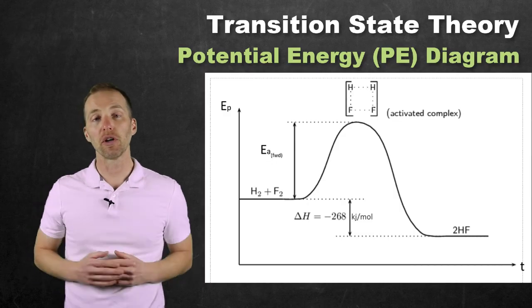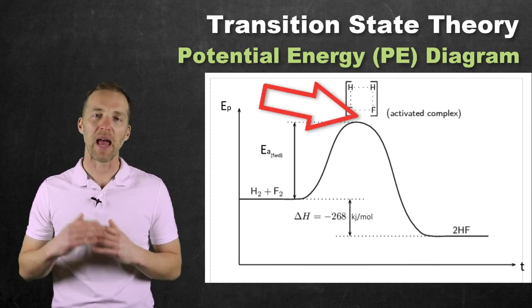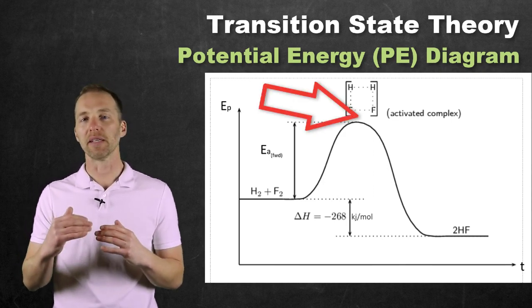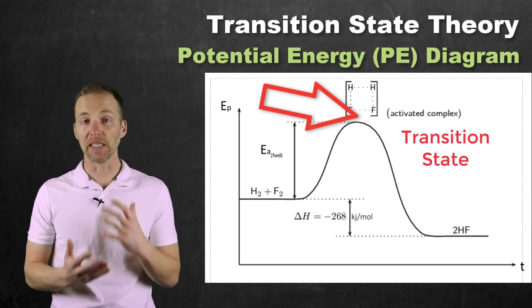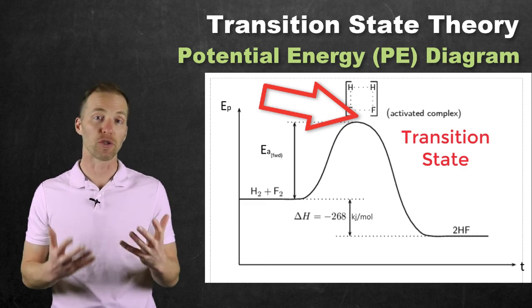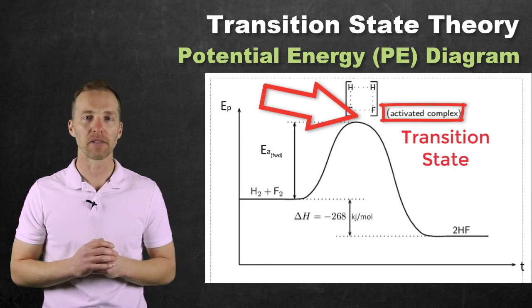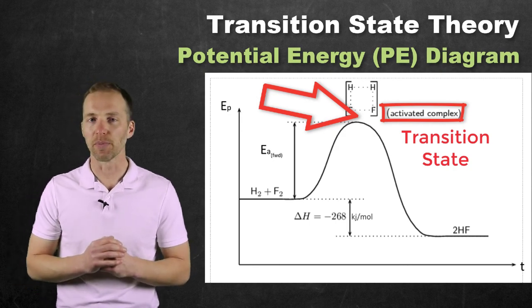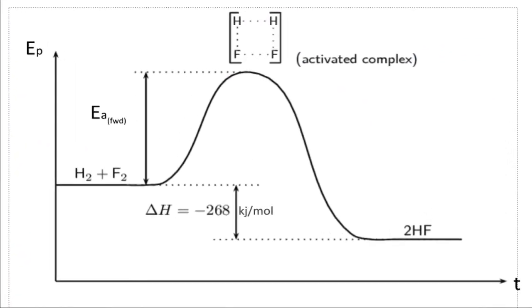This is called transition state theory. Right at the top, where the activation energy barrier hits its maximum, that's what we refer to as the transition state. Theoretically, it's transitioning from reactants to products or products to reactants. Up there, we have something called the activated complex. For students first learning these potential energy diagrams, the activated complex can be the most challenging part, so let's take a closer look to better understand how we construct and interpret them.